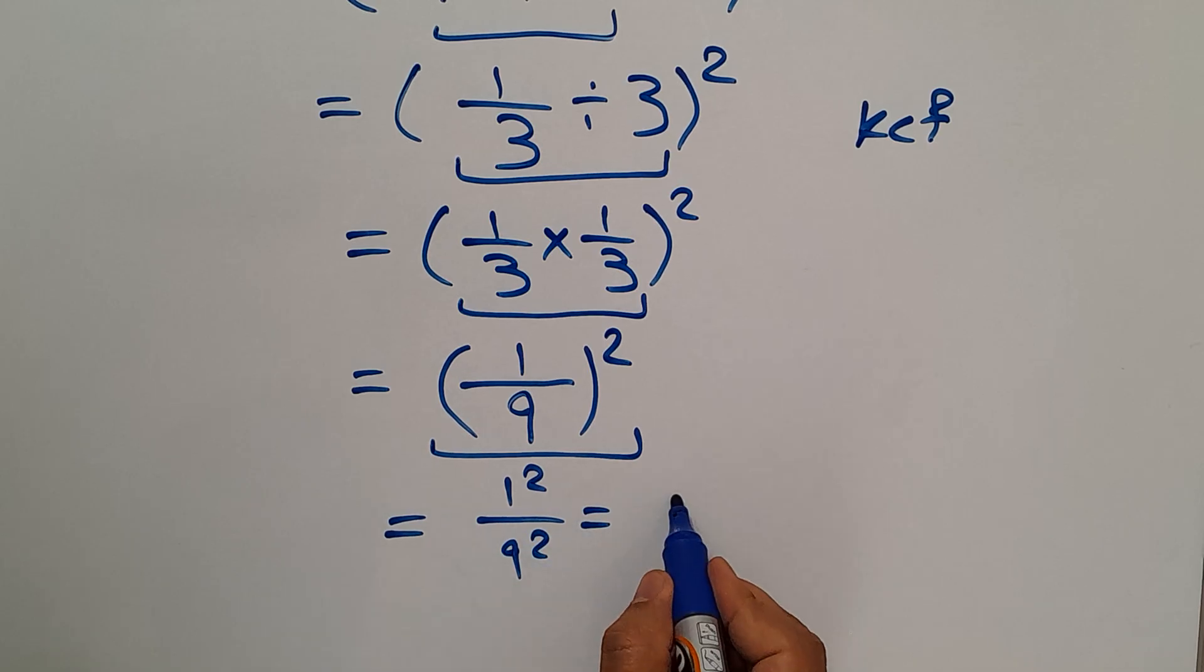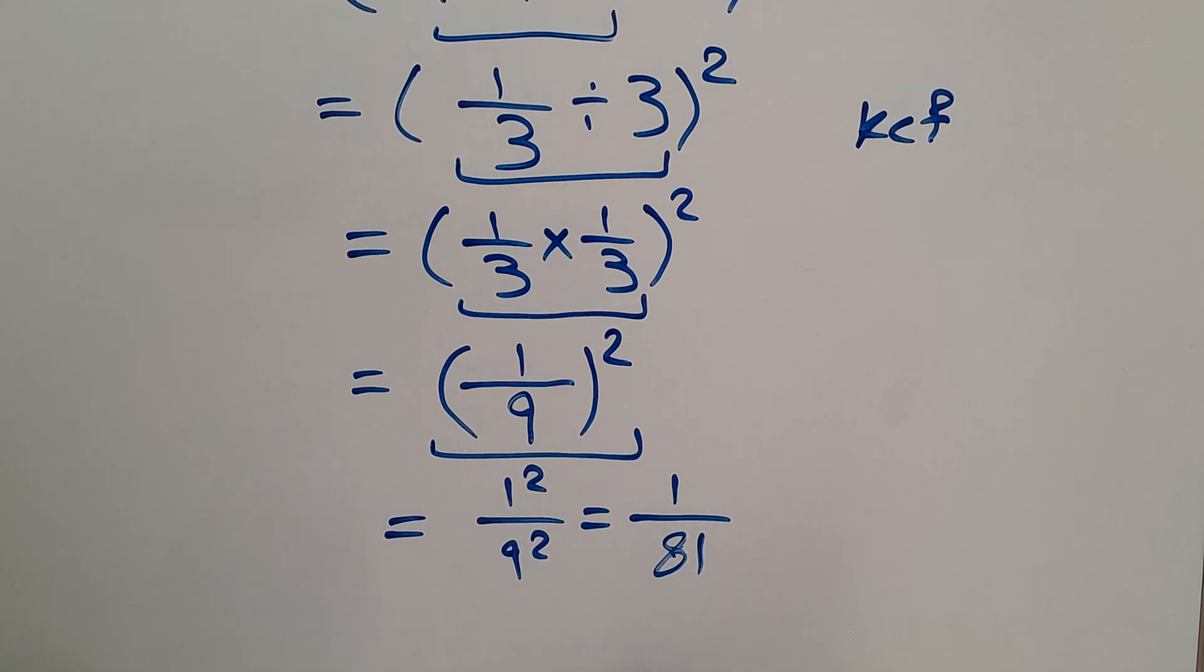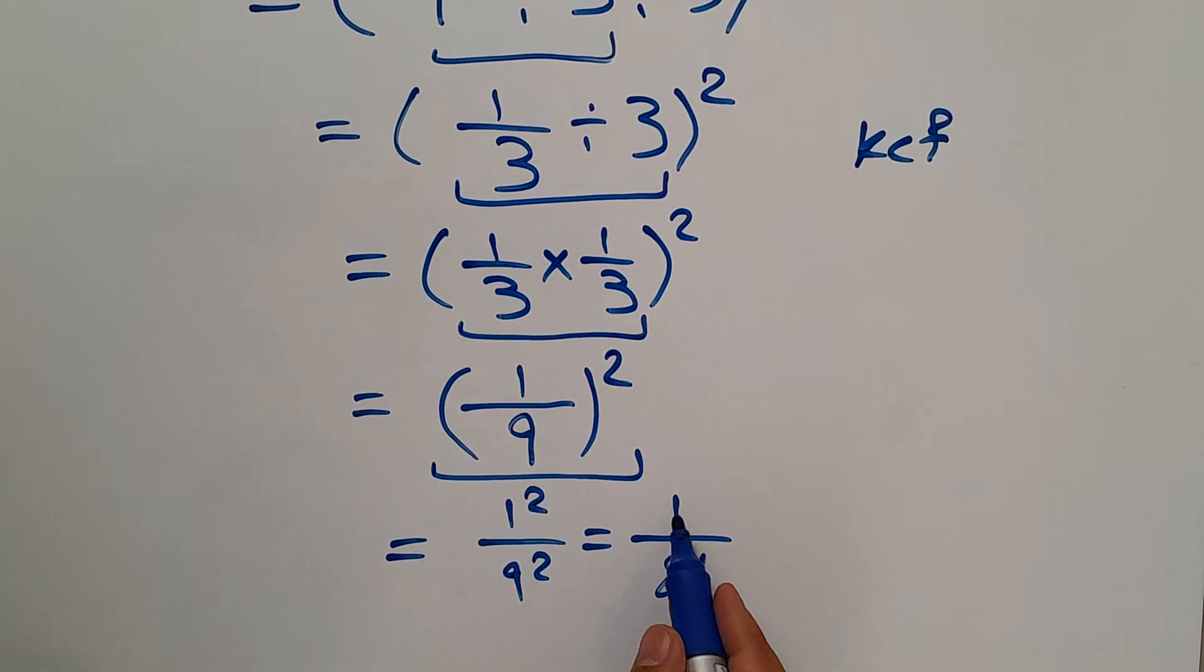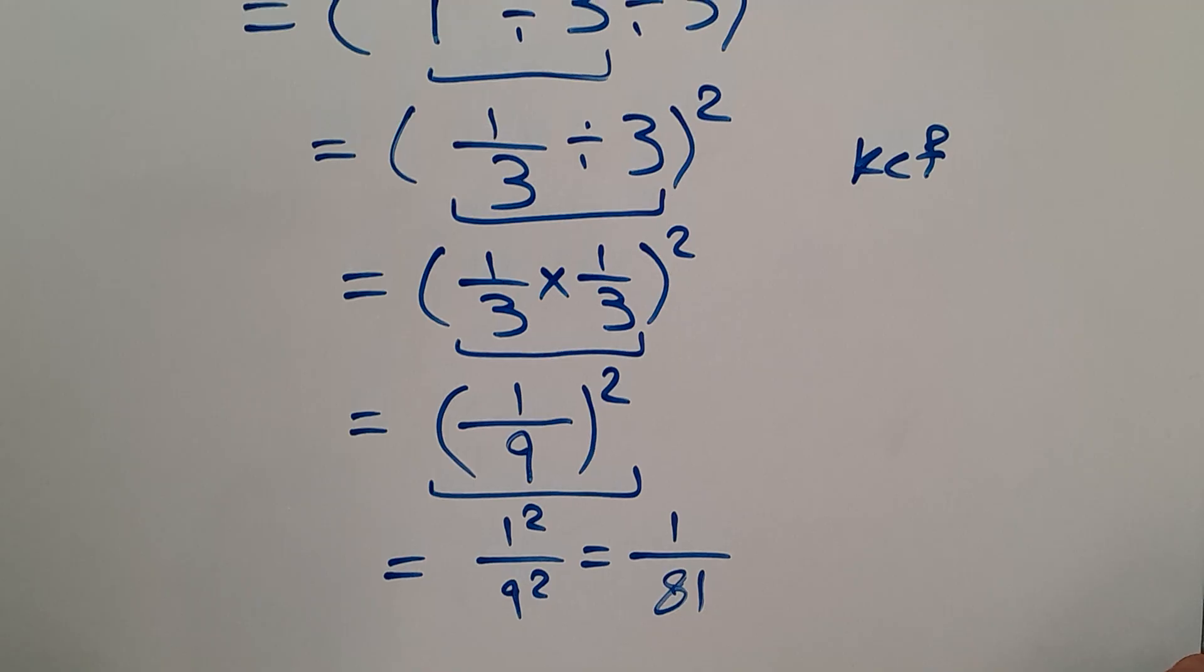And this equals 1 over 9 squared. 9 squared gives us 81, so our final answer to this problem is 1 over 81.